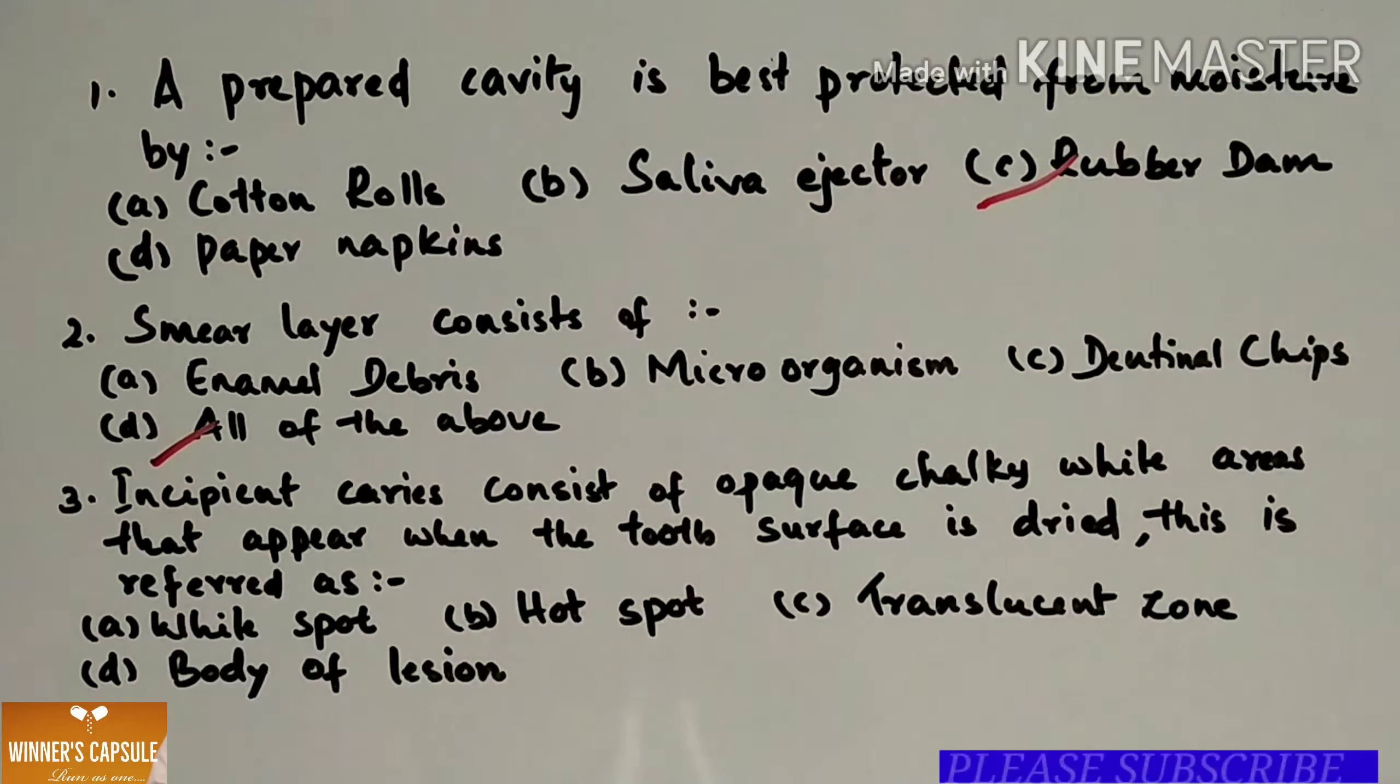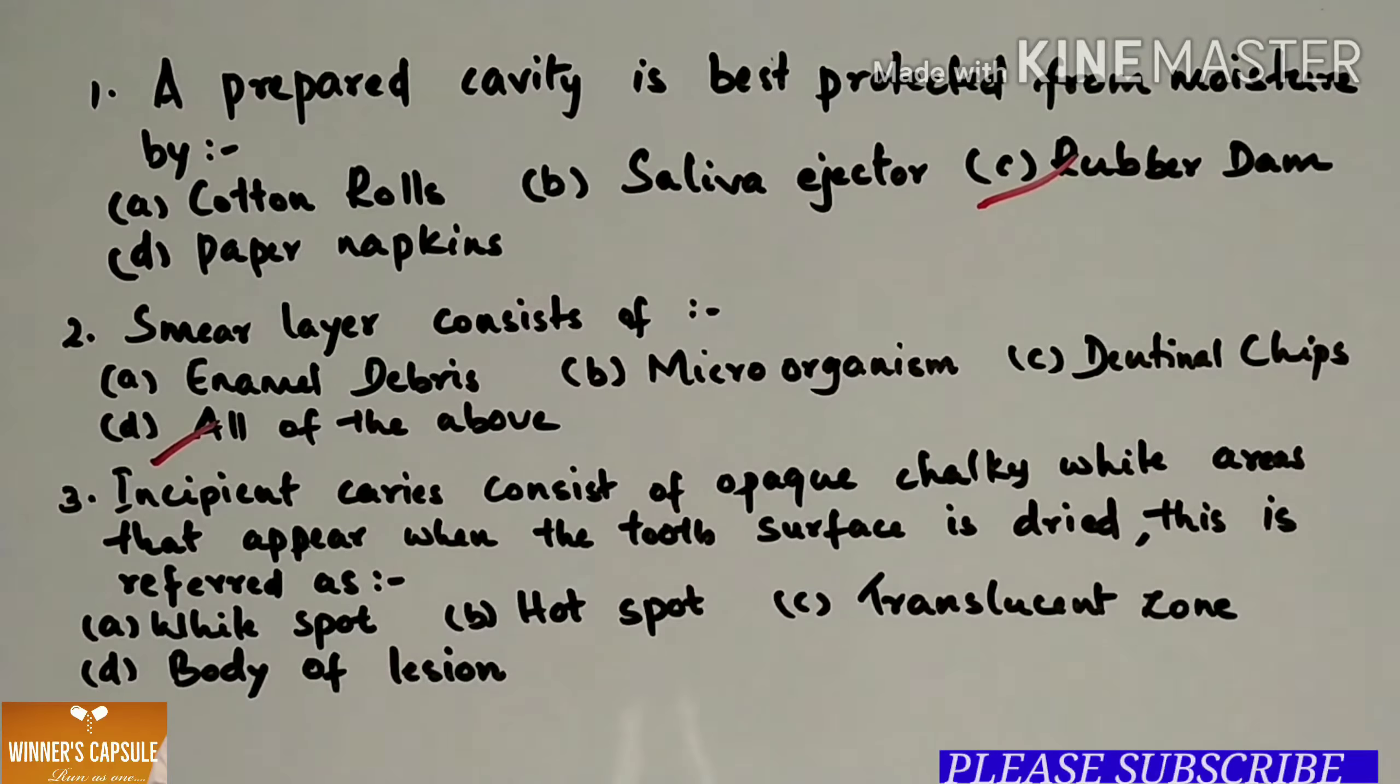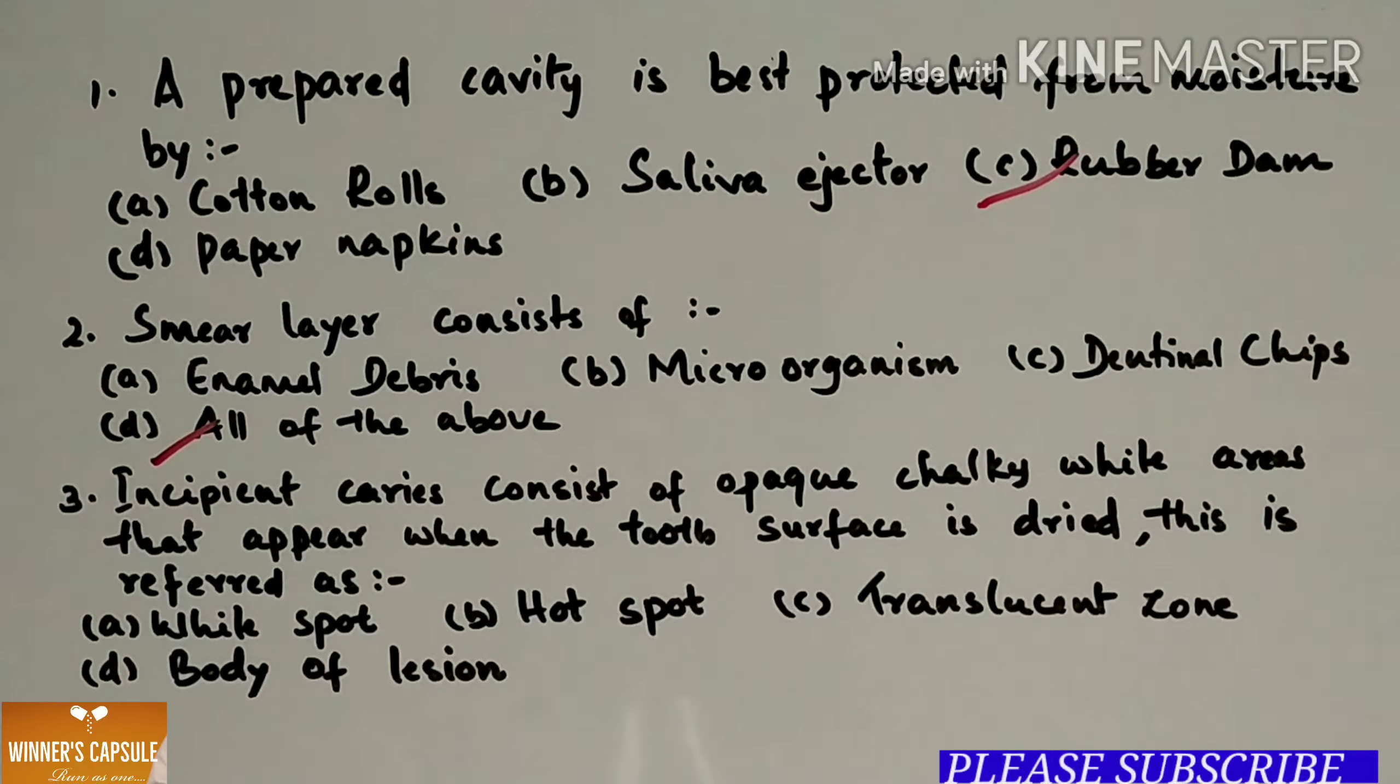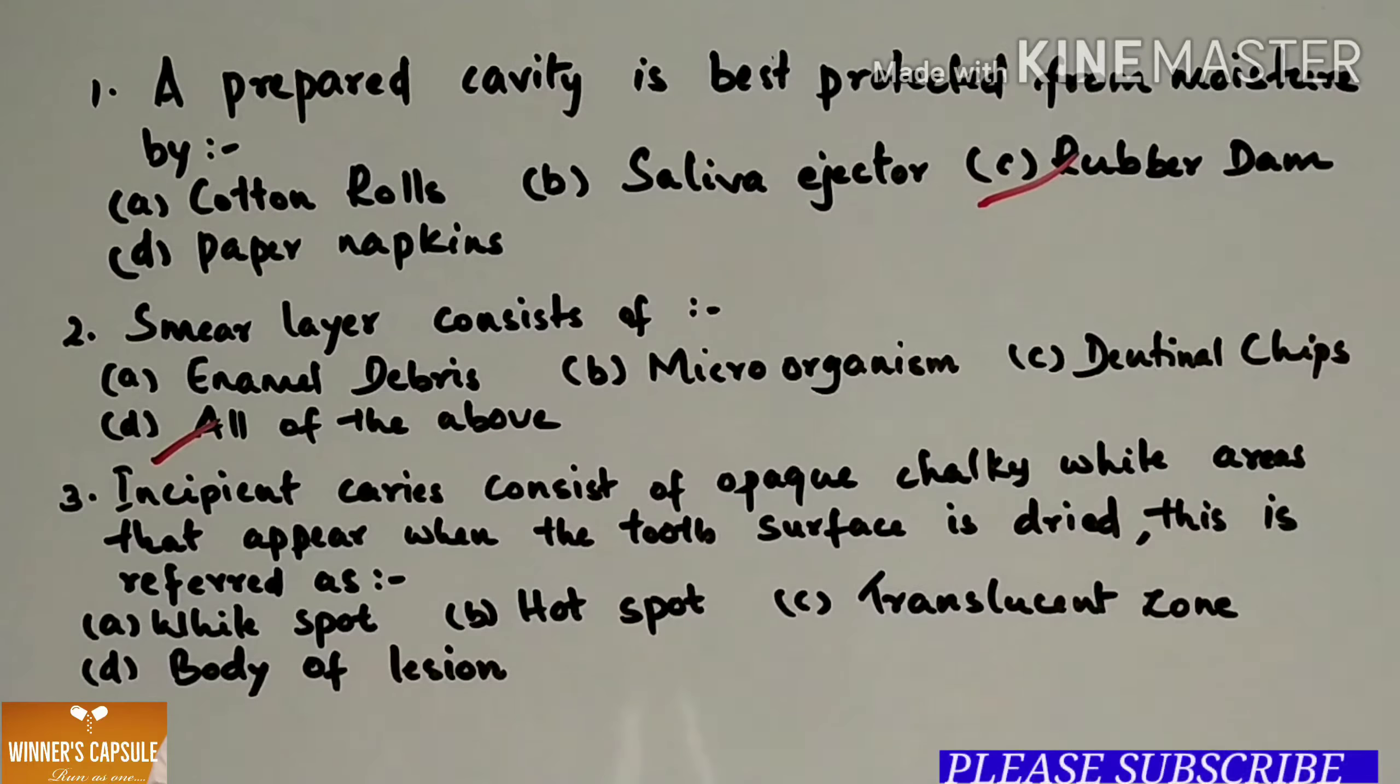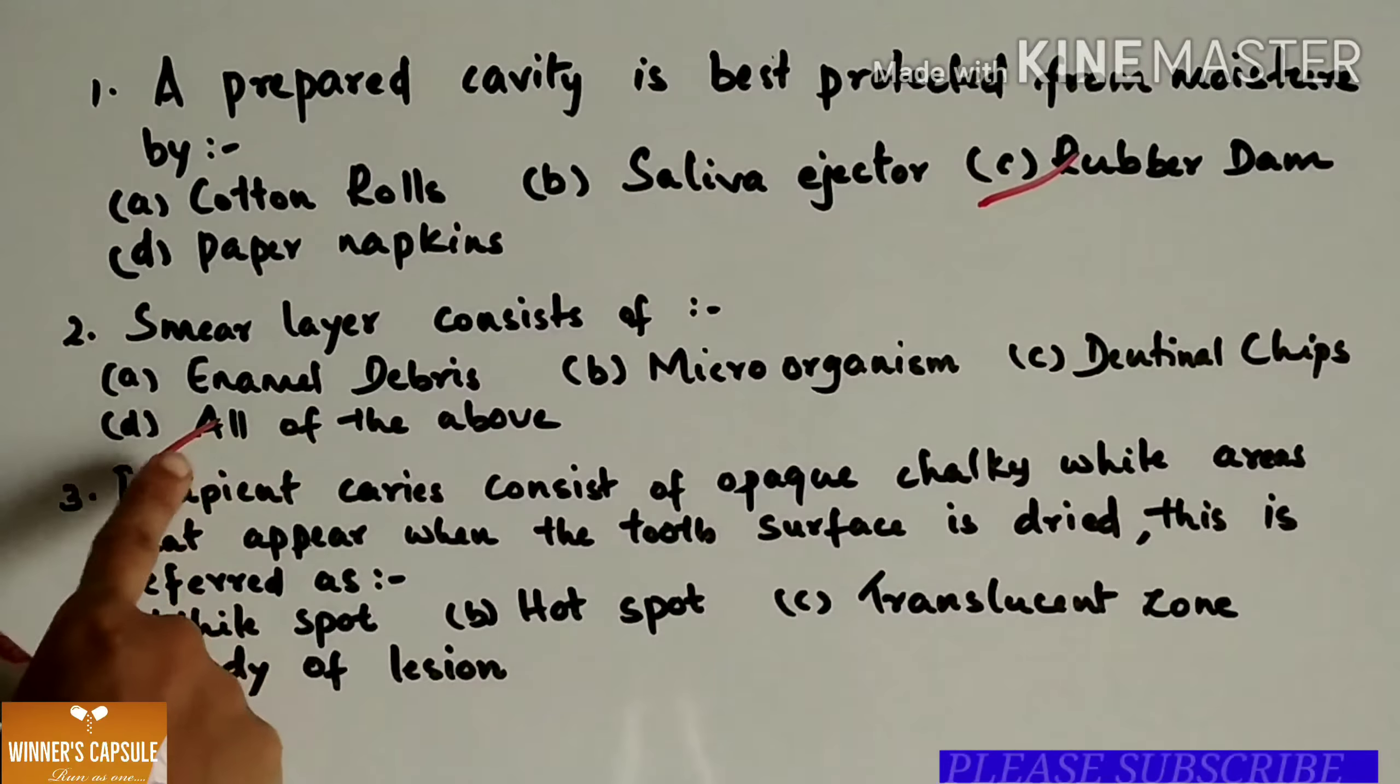Smear layer is nothing but a microcrystalline debris that is embedded in denatured collagen on the cut surface of the tooth. It's almost 1 to 2 millimeters in thickness and consists of saliva, bacteria, enamel, and dentinal particles. Smear layer debris pushed into the dentinal tubules is known as smear plug. Smear layer plus smear plug forms smear unit.